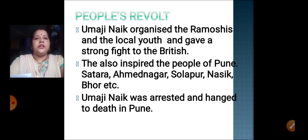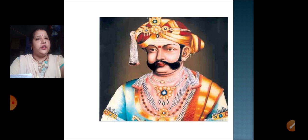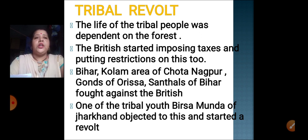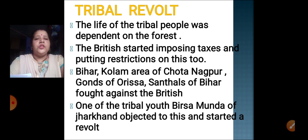Umaji Naik was arrested and hanged till death. This is a picture of Umaji Naik, which we have already seen in the previous part. We have also learned about the tribal revolt — the tribal people also started revolting against the British. The reason behind that was that the British had started imposing taxes and putting restrictions on their daily forest work.